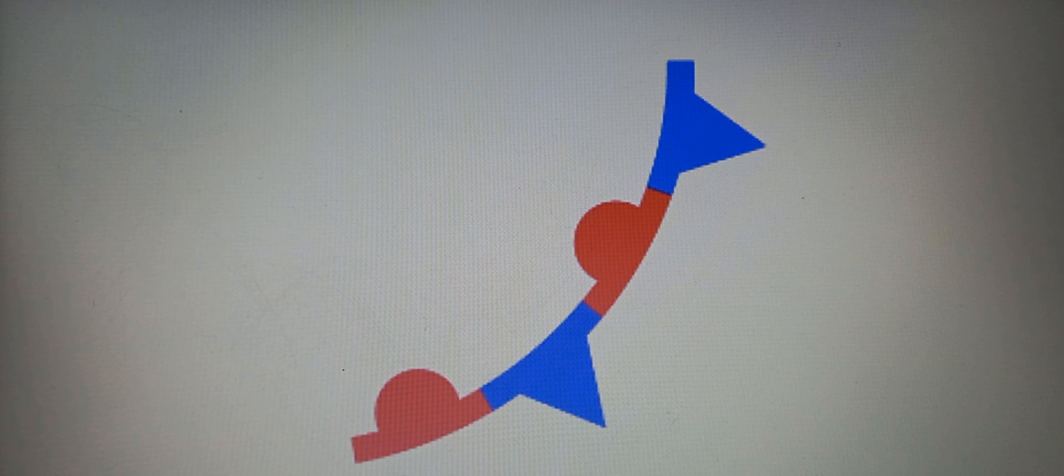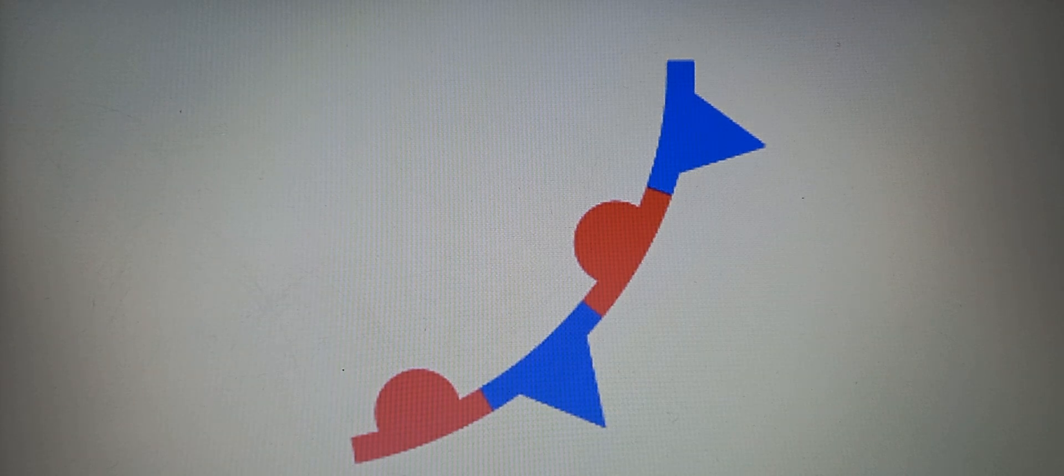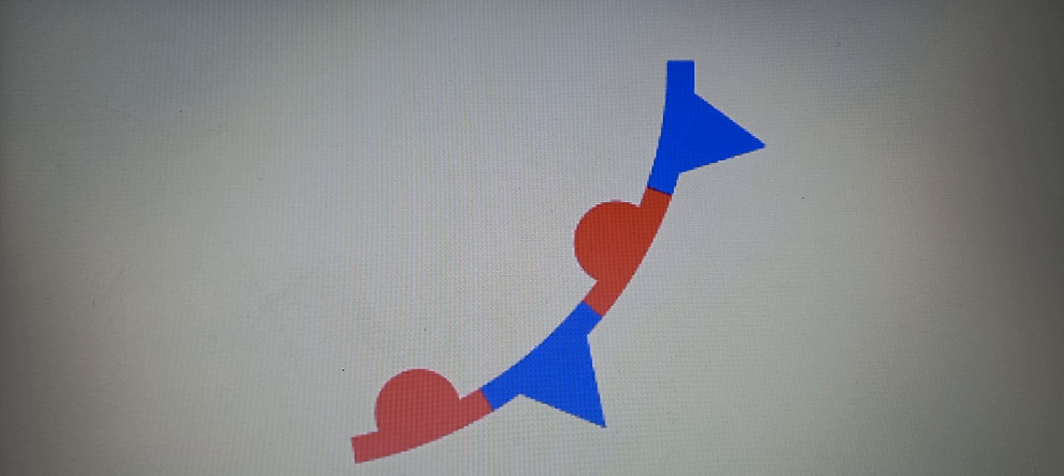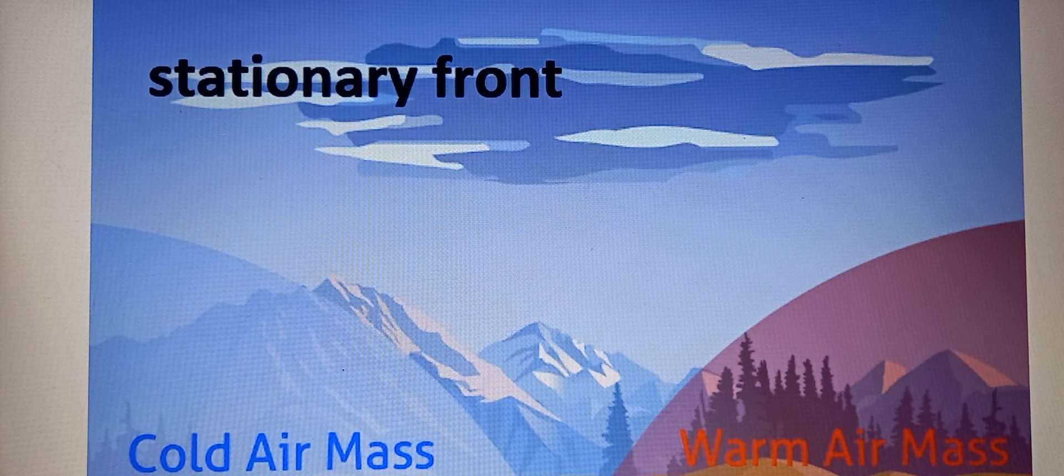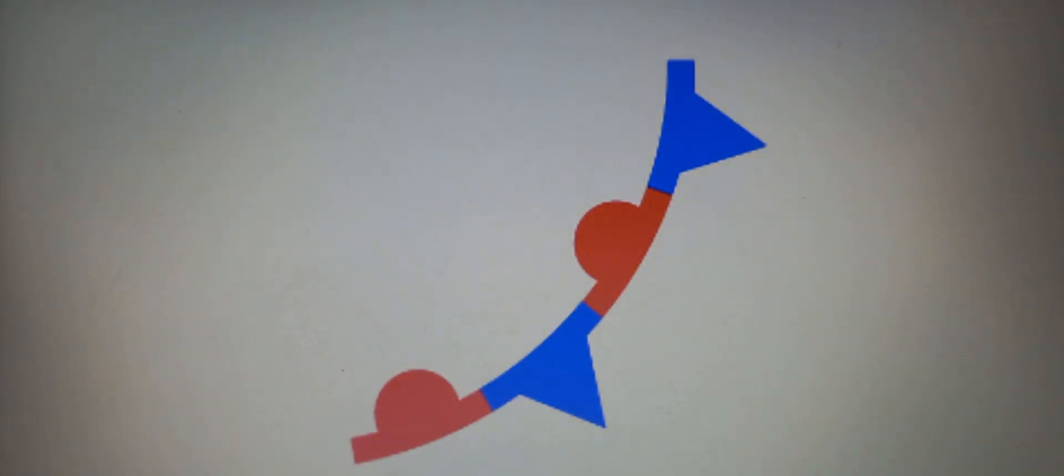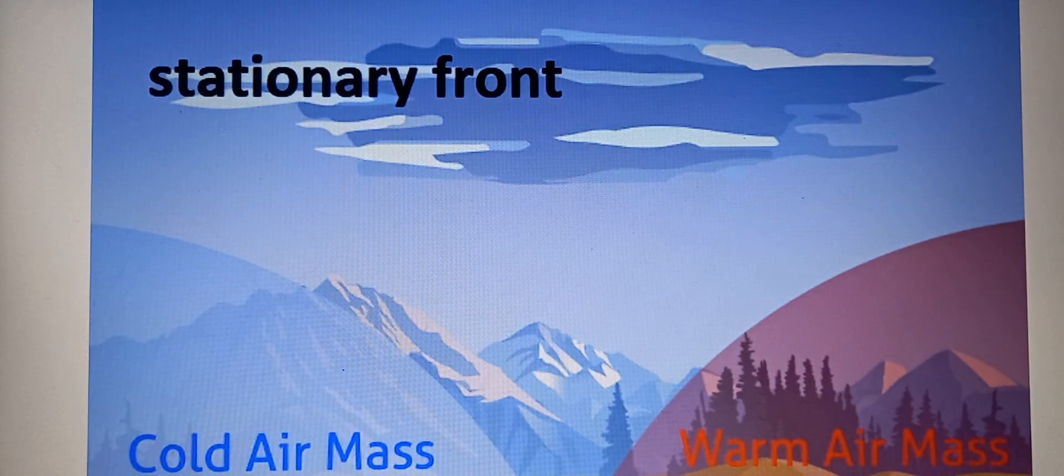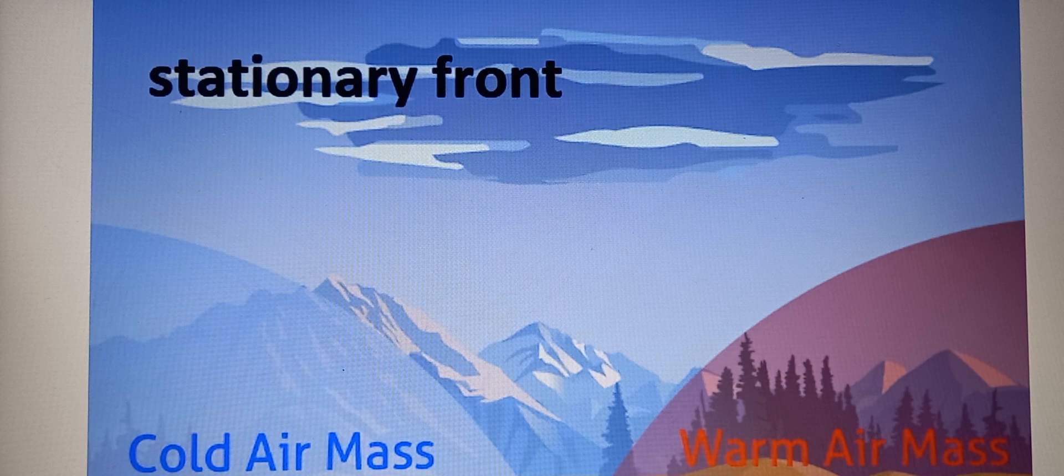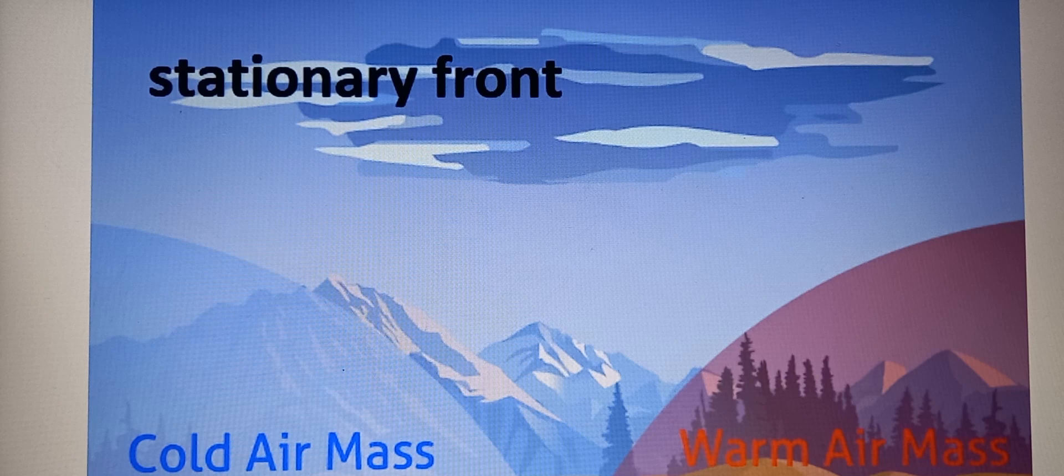A stationary front on a weather map consists of alternating blue triangles pointing in the direction of the colder air mass and red semicircles pointing in the direction of the warmer air mass along the same line. It forms when two different air masses meet and neither is strong enough to displace the other. They can result in diverse weather conditions, including prolonged precipitation due to the contrast in the air mass properties.